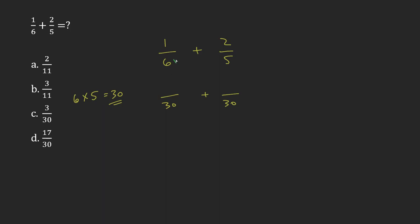Now I did this by taking 6 and multiplying by 5, so I'm going to have to take the top and also multiply by 5, so that's going to give me 5 over 30.